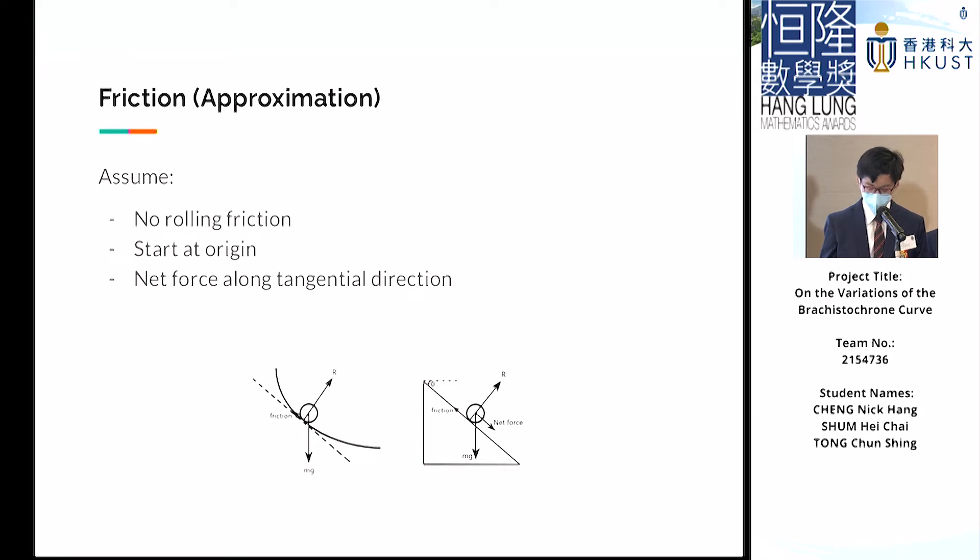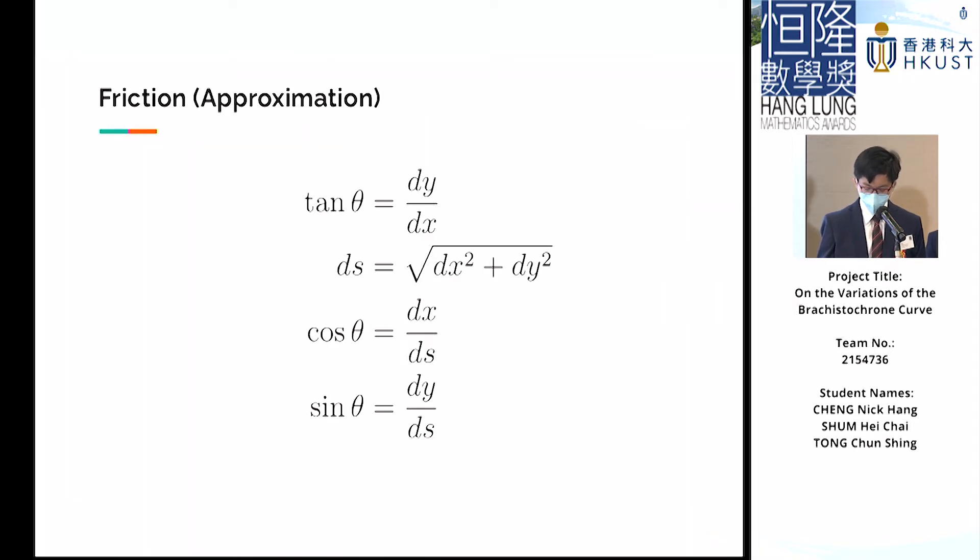Next, we explore the Brachistochrone curve when friction is taken into account. To give an approximation for simpler calculations, we start at the origin, ignore the rolling friction, and assume that the net force is along the direction of motion. That is, we ignore the forces that change the object's direction. We define in this section the angle of inclination and its sine, cosine, and tangent in terms of dx, dy, and ds.